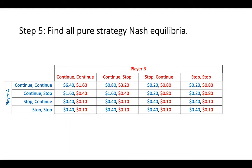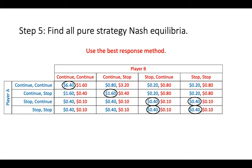Our next step will be to find all of the pure strategy Nash Equilibria of the game. Given the size of this game, we will use the best response method. We will start by finding all of Player A's best responses to Player B's possible strategies. If Player B chooses to always continue, then Player A's best response is to always continue as well. If Player B's strategy is continue then stop, then Player A's best response is also continue then stop. If Player B's strategy involves stopping on their first move, then Player A's best response is to stop on their first move as well.